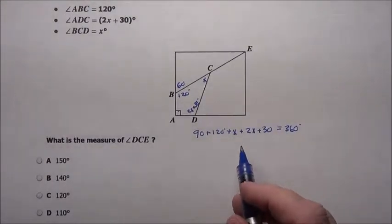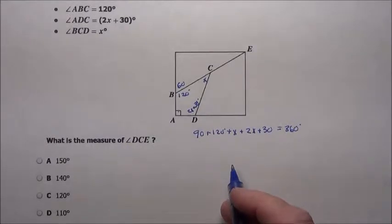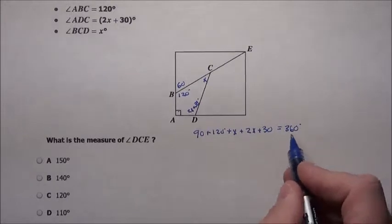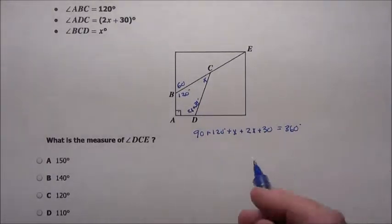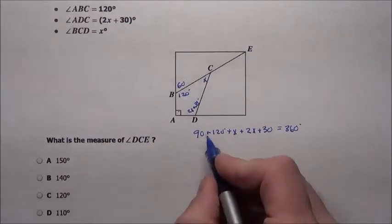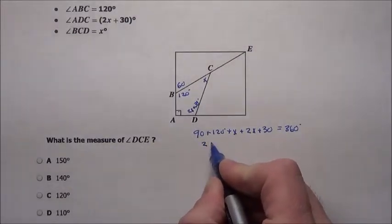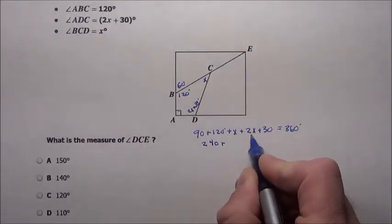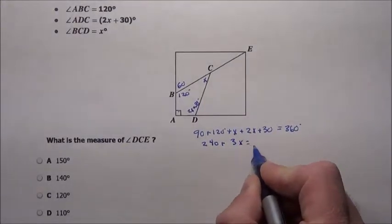If you don't remember, you just use the formula n minus 2 times 180. That would give you 4 minus 2 is 2, 2 times 180 is 360. But just think of a rectangle or square, you know that adds up to 360. So here, 90 and 120 is 210 plus the 30 is 240. x and 2x is 3x equals 360.